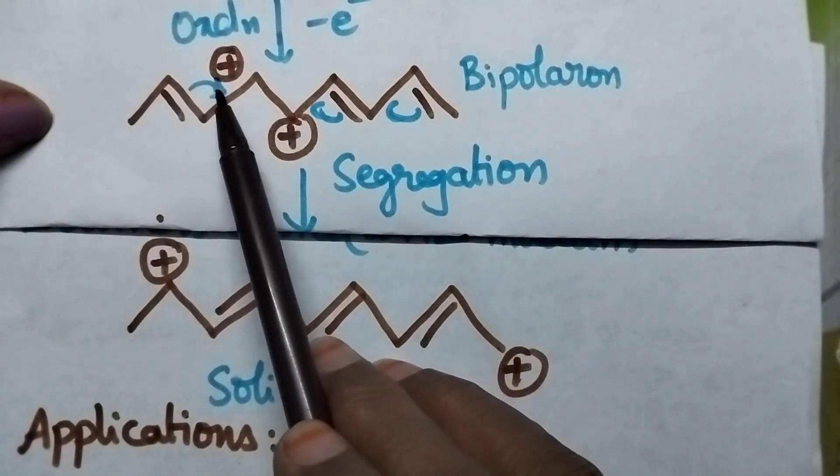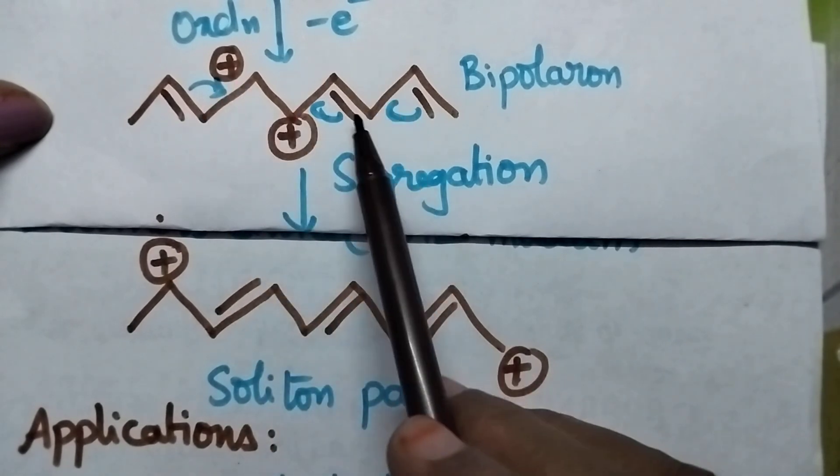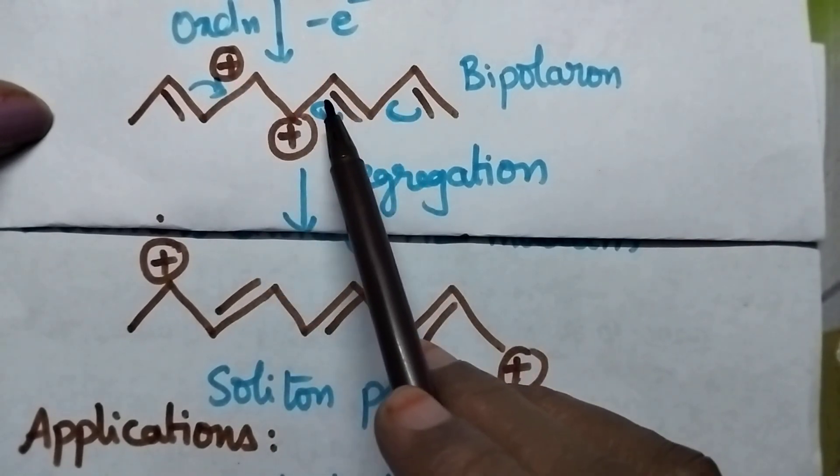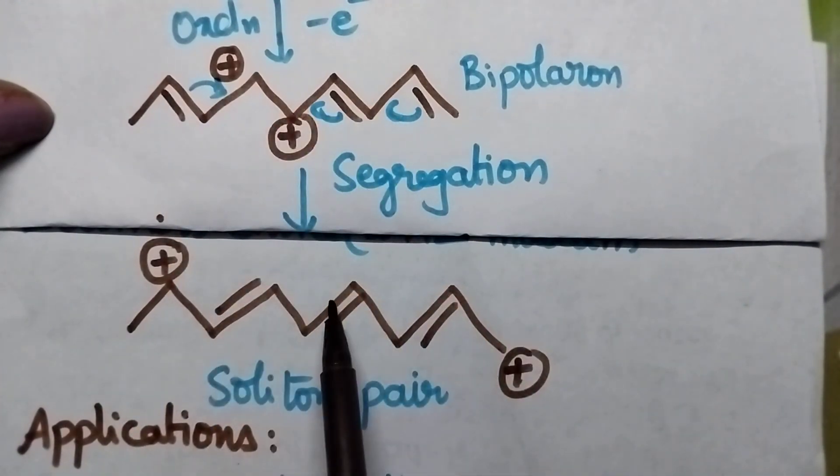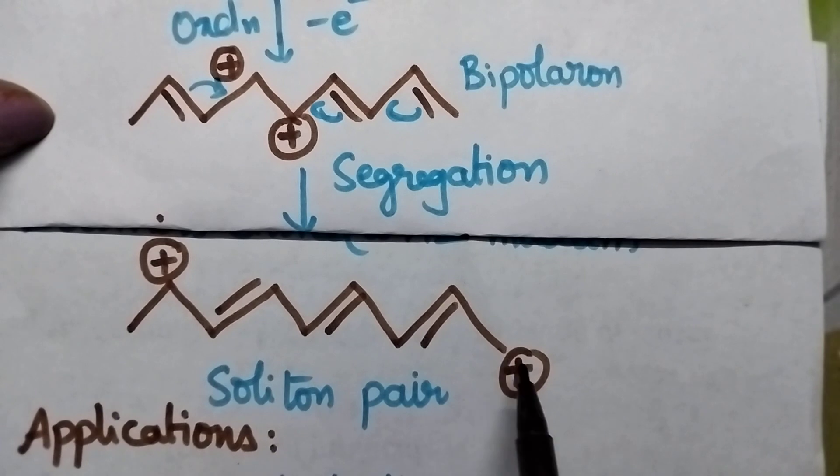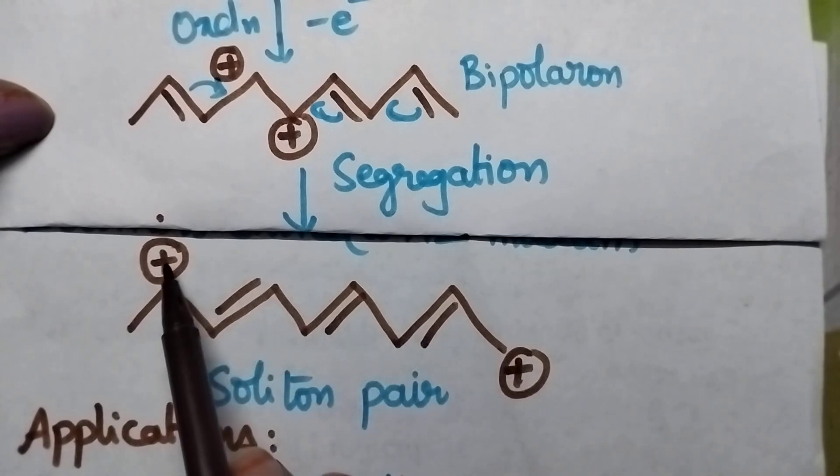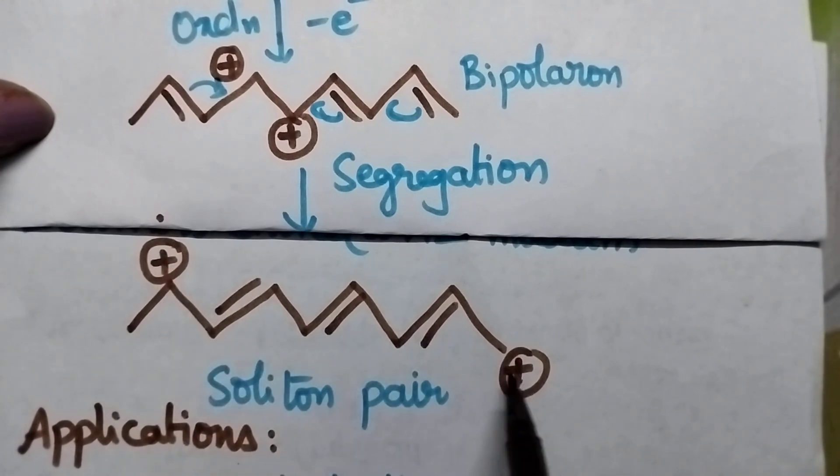Here this double bond will form a bond here, and this double bond will form a double bond here. With the result, there will be a change in the position of the double bonds. This end carbon and opposite carbon will get the positive charges. Here, the two charges are far away from each other, and it gives stability to the polymer. This is called as soliton pair.